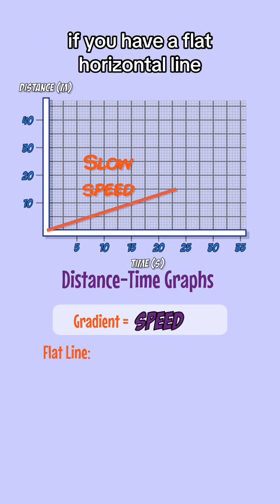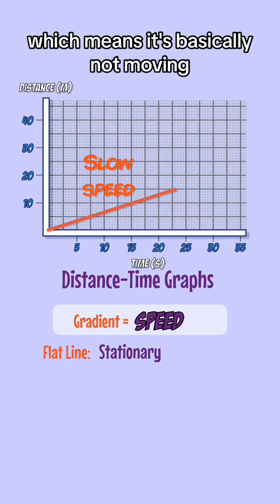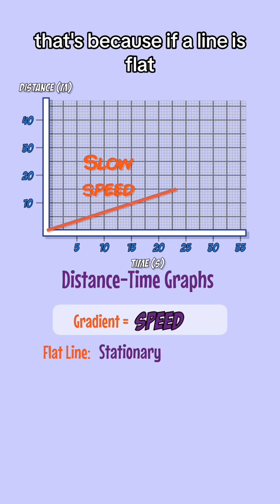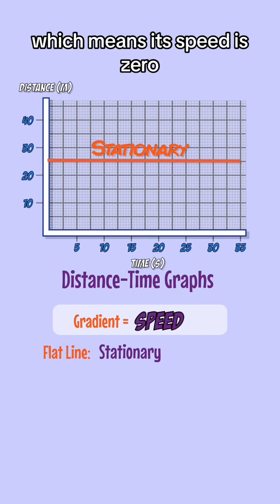If you have a flat horizontal line, that means the object is stationary, which means it's basically not moving. That's because if a line is flat, we say its gradient is zero, which means its speed is zero.